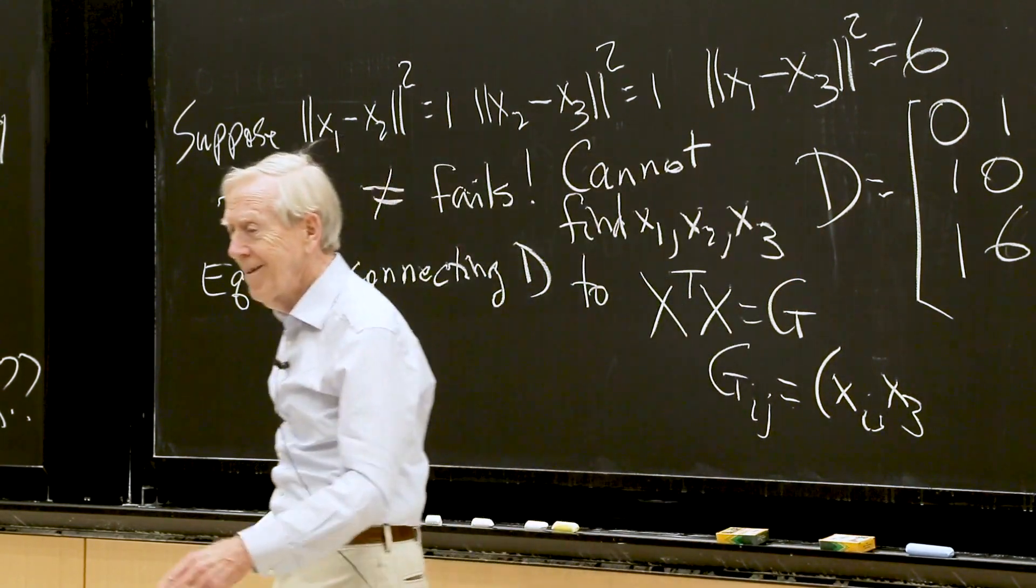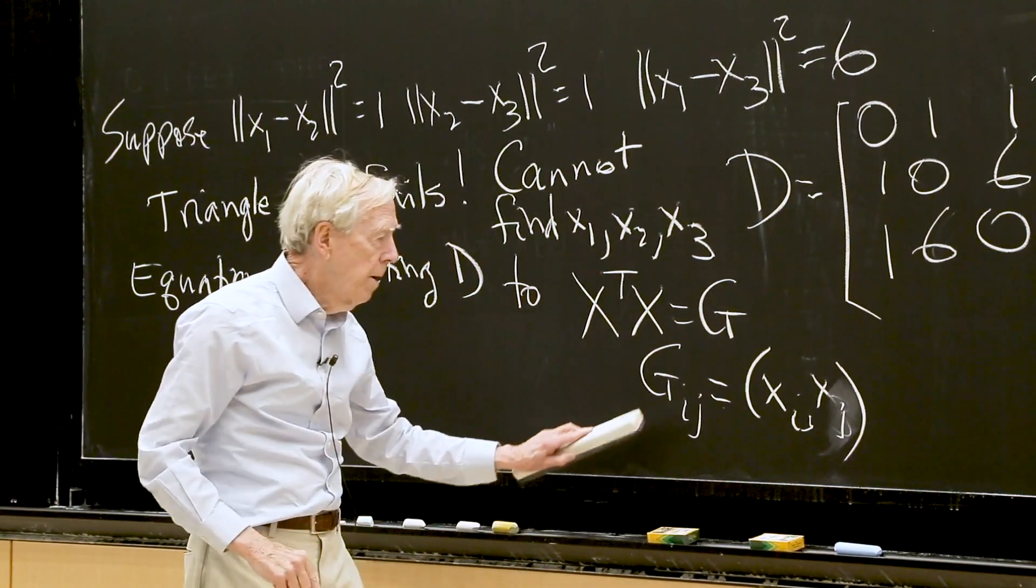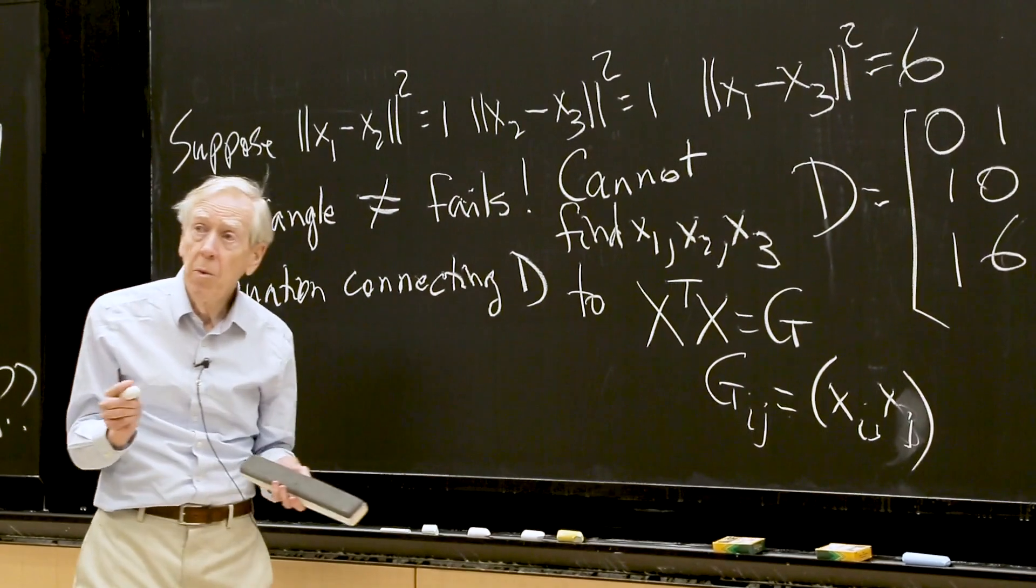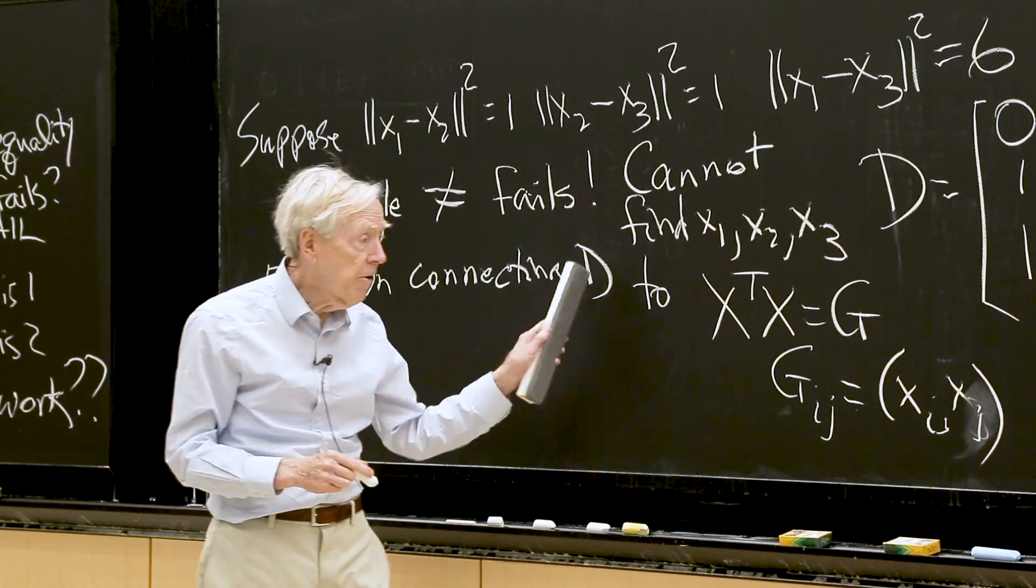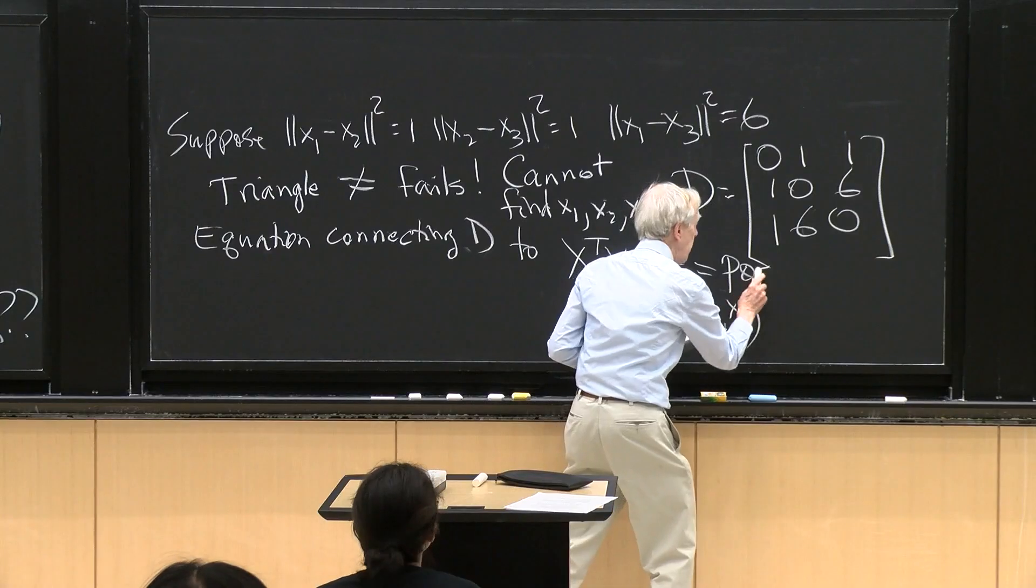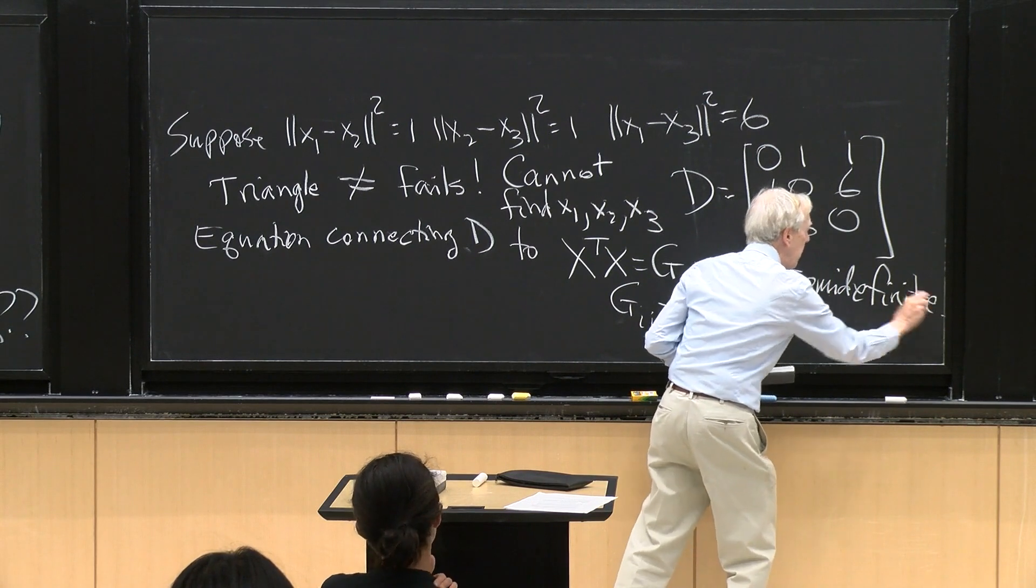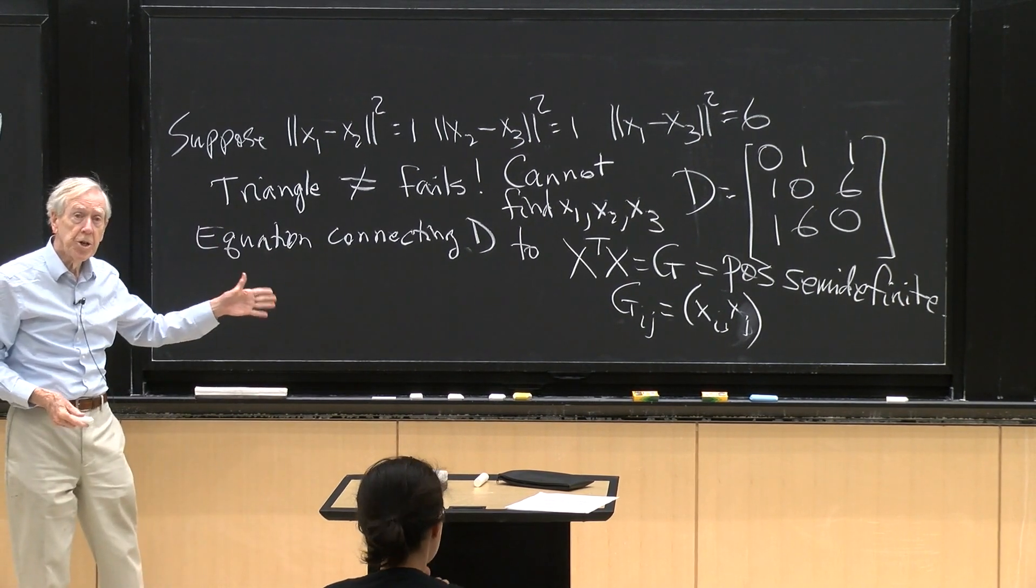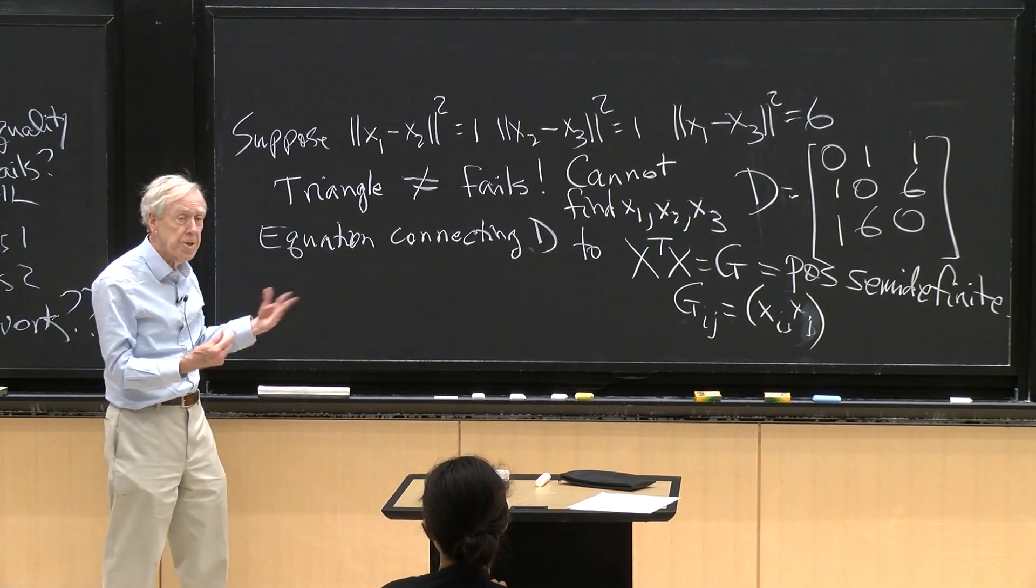So what is the matrix D for this problem? D is a 3 by 3 matrix with these distances squared. And it was convenient to use distances squared, because that's what comes into the next steps. Of course, the distance from each x to itself is 0. The distance squared was that. This one was that. But this one is 6.